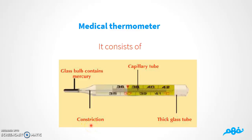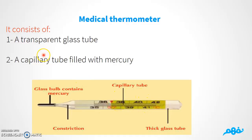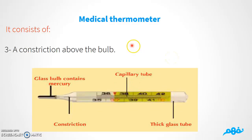Let's talk about each part in detail. We have a transparent glass tube, and we have a capillary tube filled with mercury. The third part is the constriction, which is located above the bulb — the glass bulb that contains mercury.